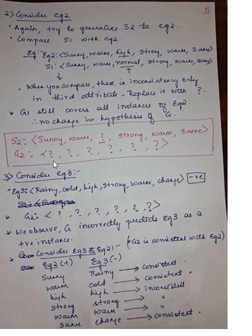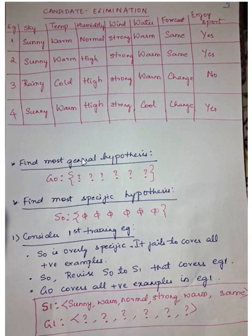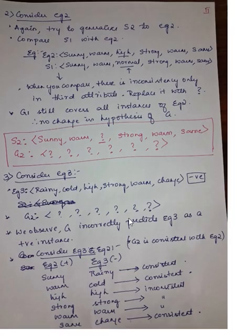If we say all question marks, that means it is incorrectly predicting example 3 as positive. That is an incorrect prediction, because certain values are leading to a negative instance. For example, if sky is sunny it is positive, but if sky is rainy it is negative. If we follow the all-question-marks hypothesis, it would say sunny is positive as well as rainy is positive, which is a wrong inference. So we need to change the generic hypothesis.